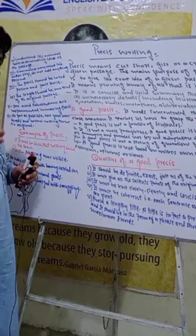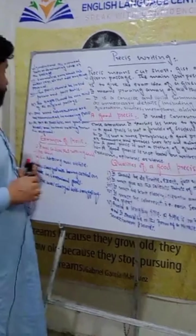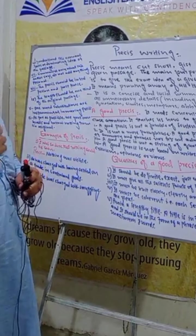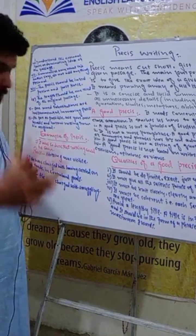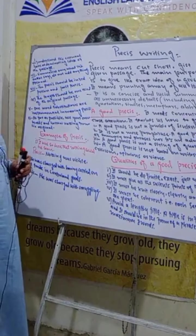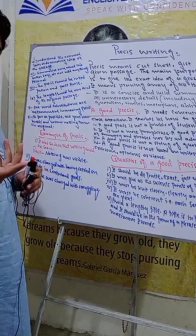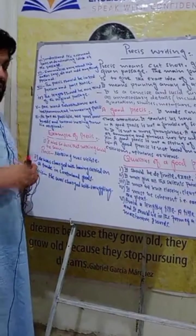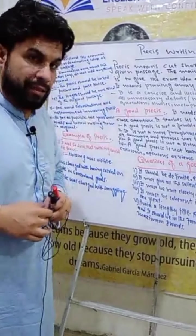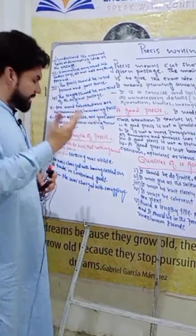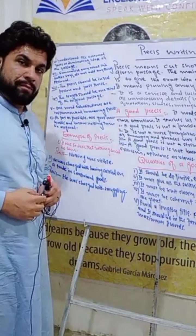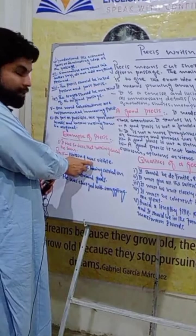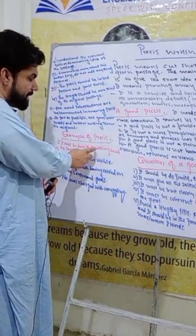Length is one-third of the original — that's been covered. As far as possible, use your own words and borrow nothing from the original passage. Here is an example — a sentence and its precis: 'It was so dark that nothing could be seen.' The precis of this is simply: 'Nothing was visible.' A sentence of ten words has been reduced to three words — that is precis writing.